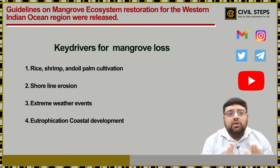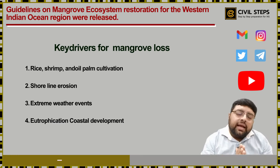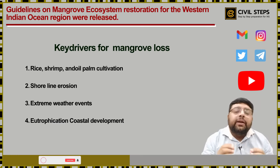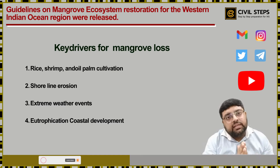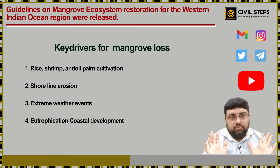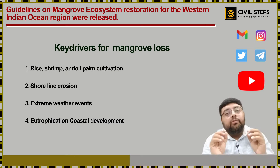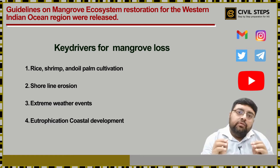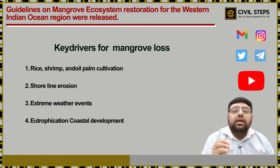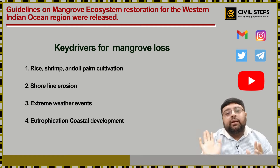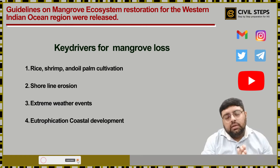Mangroves are being lost in India, and the major reasons are: first, rice, shrimp, and oil palm cultivation; second, shoreline erosion; third, extreme weather events; fourth, eutrophication; and fifth, coastal development. Remember these five reasons.